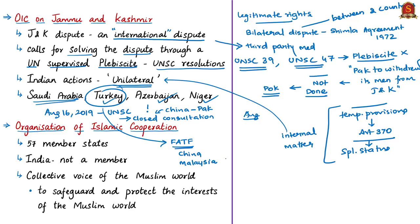According to OIC, it is the second largest intergovernmental organization after the United Nations, with 57 member states across four continents. Some neighboring countries of India that are part of this organization include Pakistan, Bangladesh and Afghanistan. Country-wise, India has the second-largest share of Muslims in the world, and by 2050 India is projected to have the largest share of Muslims globally — yet India is still not a member of OIC.